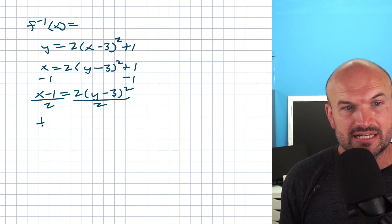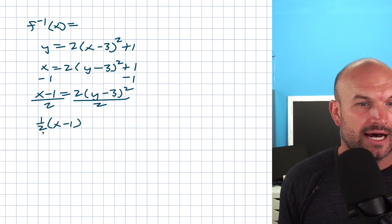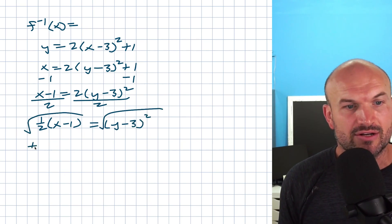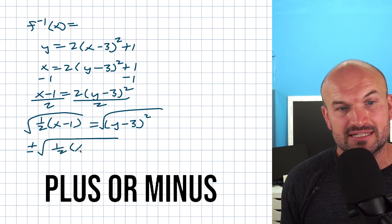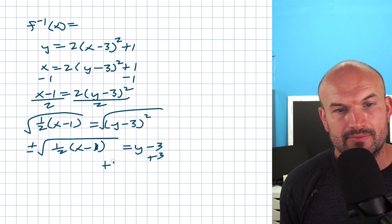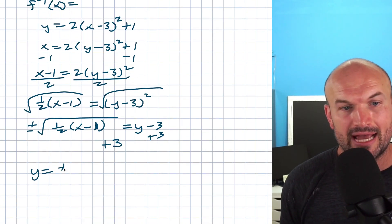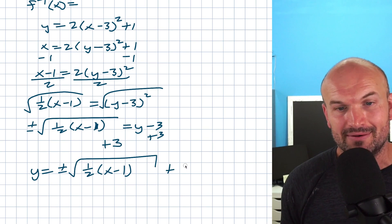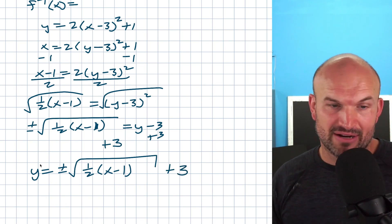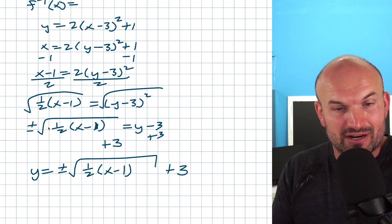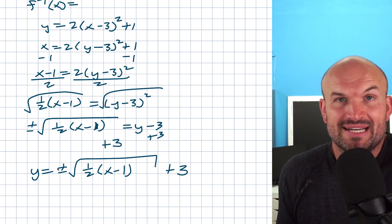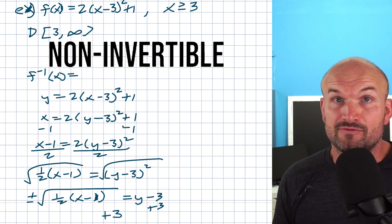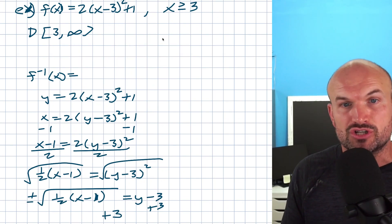Rewriting: (1/2)(x − 1) = (y − 3)². Taking the square root of both sides gives ±√((1/2)(x − 1)) = y − 3, so y = ±√((1/2)(x − 1)) + 3. Now there's an issue with the plus or minus: for any input, we can only have one output for it to be a function. We can't have both — that would make the function non-invertible. This is exactly why we had the domain restriction x ≥ 3: that restriction is what makes this function invertible.